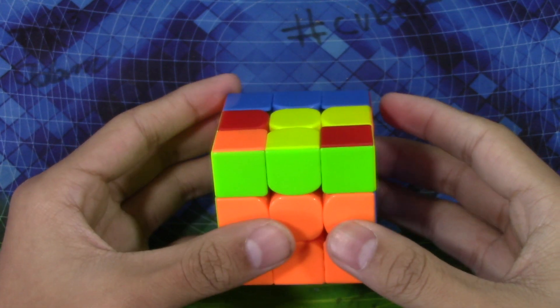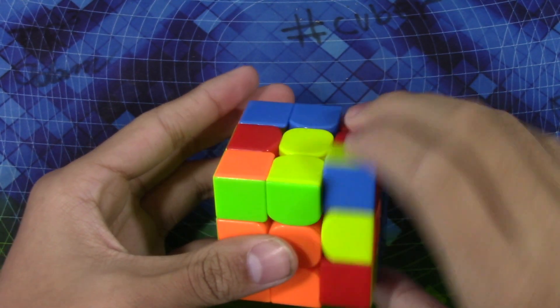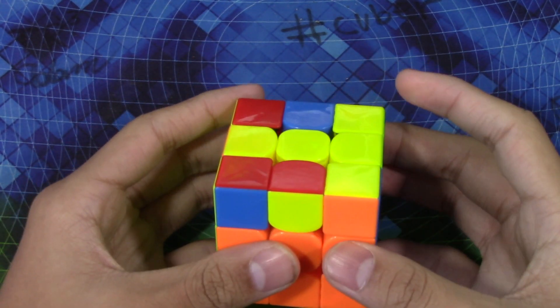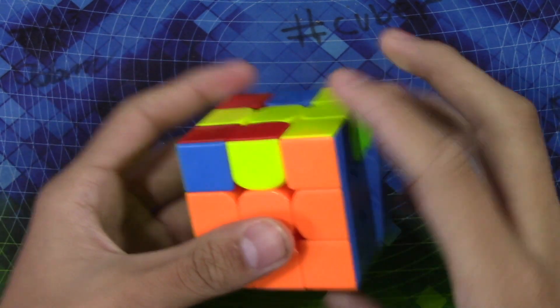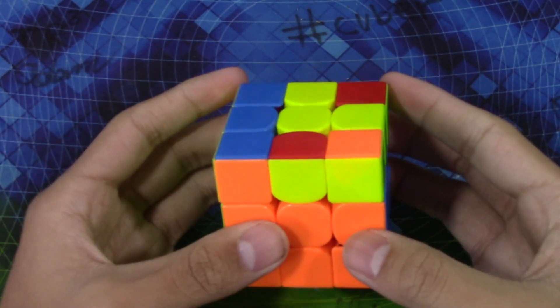The alg is really simple. It's just back anti-sune, so R prime U2 R U R prime U R, and then you just have F sexy F prime, just like that. Here's what it looks like at full speed.